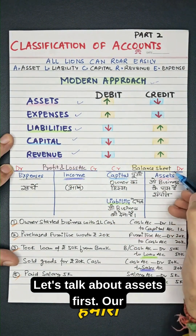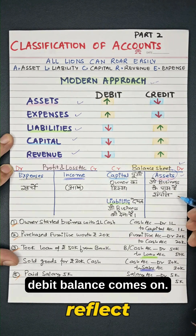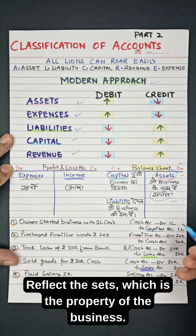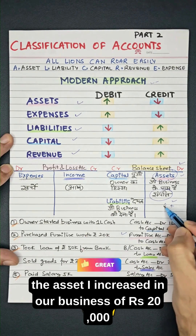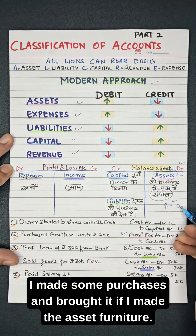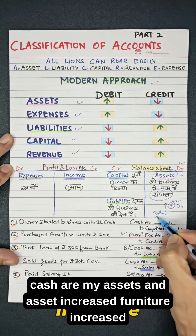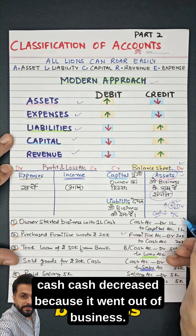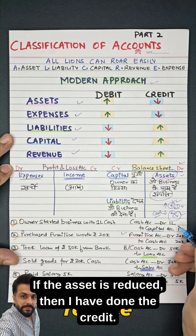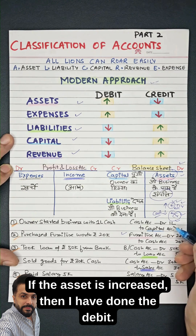Let's talk about assets first. The debit balance comes on the right hand side of the balance sheet. Assets reflect the property of the business. For example, I bought furniture — an asset that increased in my business by Rs 20,000, so I debited it. Cash and furniture are both assets. Asset increased means furniture increased as a fixed asset. Cash decreased because it went out of business — if the asset is reduced, then credit is done; if the asset is increased, then debit is done.